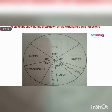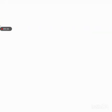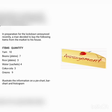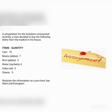With this, I believe we can now do pie chart, histogram, bar chart, and frequency table very well. Now we have a practice question to try. In preparation for the lockdown announced recently, a man decided to buy the following items: yams — 10, beans — 7 plates, rice — 3 plates, water — 4 sachets, Coca-Cola — 3 bottles, onions — 9 pieces. Illustrate the information on a pie chart, bar chart, and histogram.